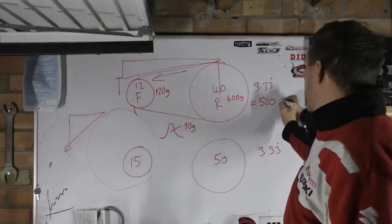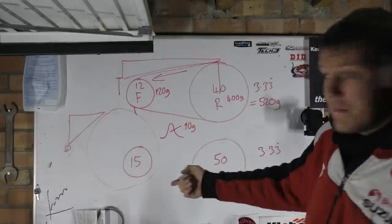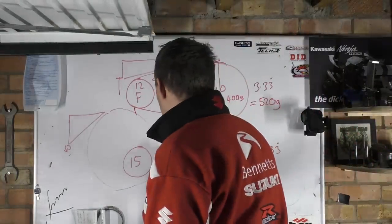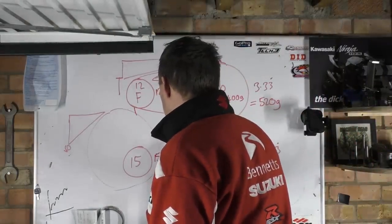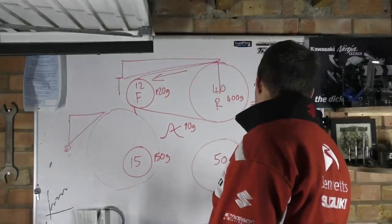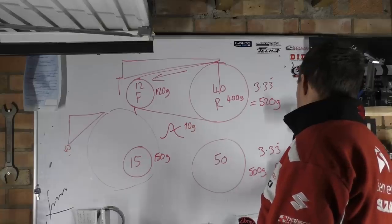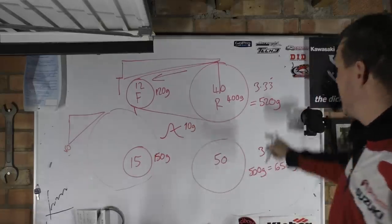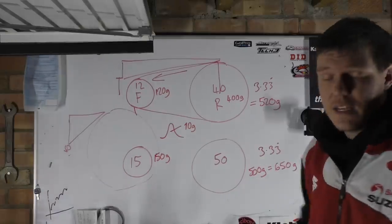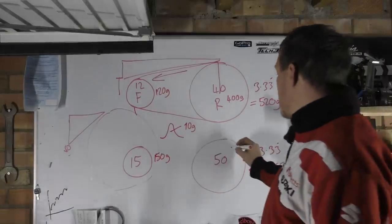And here we've got 400 grams, right. So for a total we've got 520 grams for this one. For the same gear ratio, we've got 15, so we've got 150 here, and you can automatically see what happens. 500, which is 650. Right, so we've got 520 versus 650. These are just heavier.